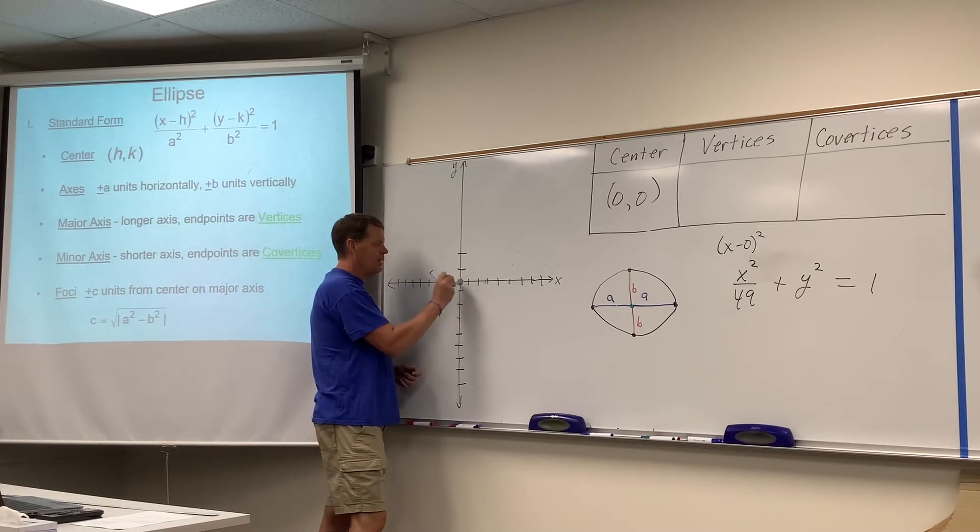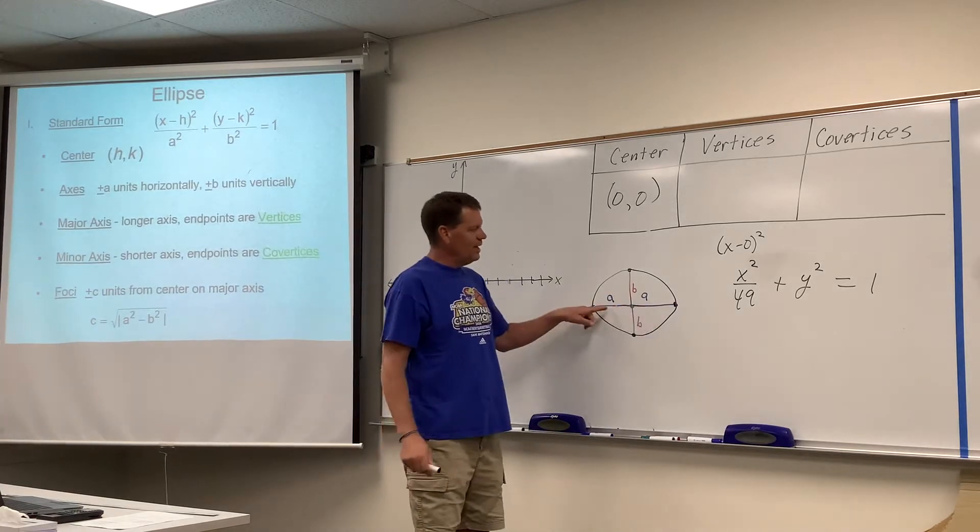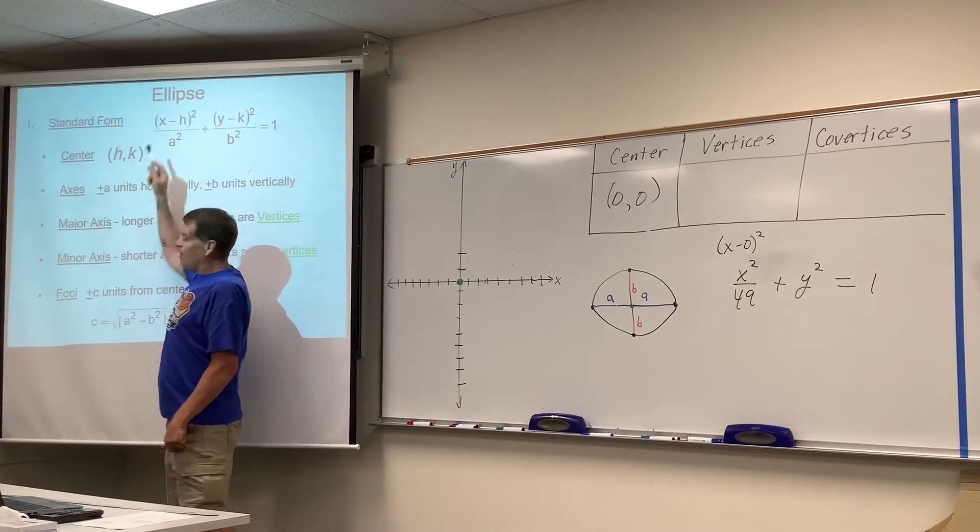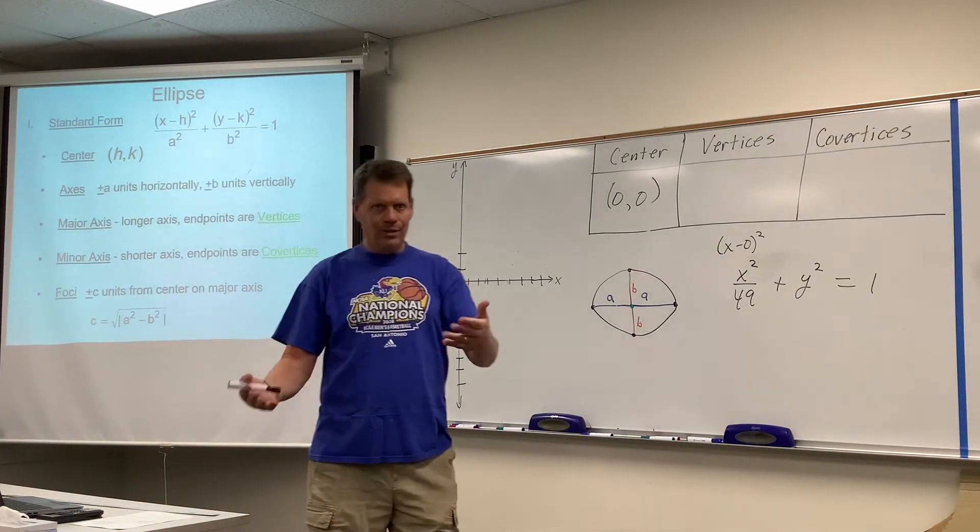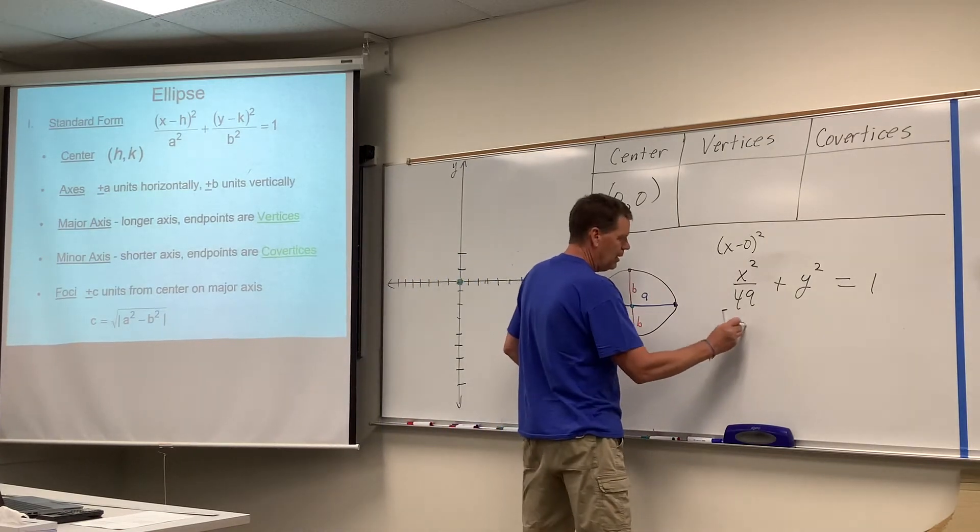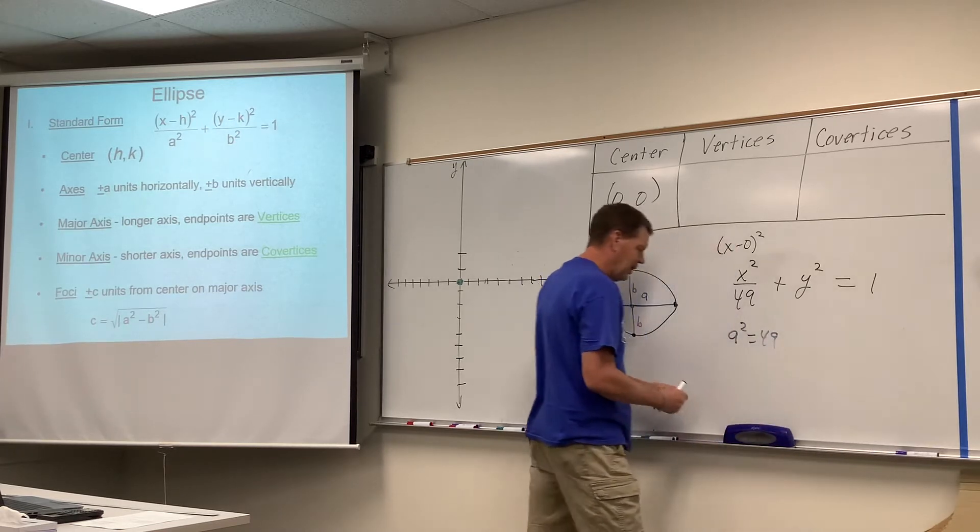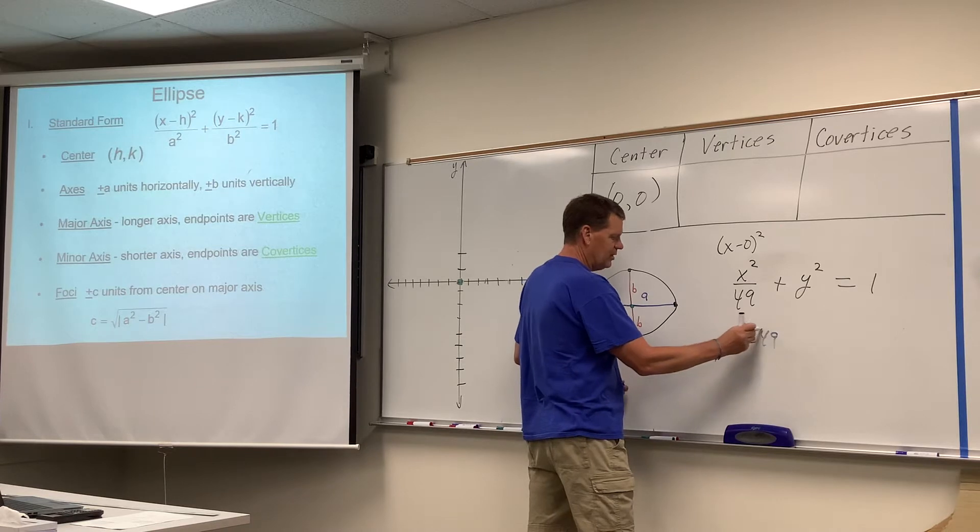So, that would be that center green point there. And then, we travel horizontally a units. I always point out that the a is the denominator of the x fraction. x is horizontal, a is horizontal. So, if a squared is 49, see, a squared is the denominator of the x fraction.